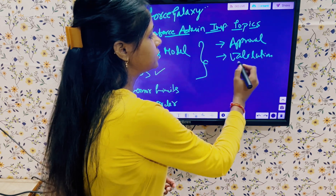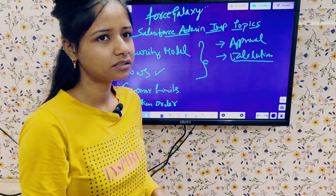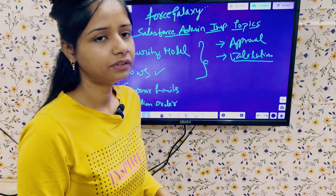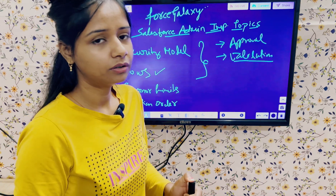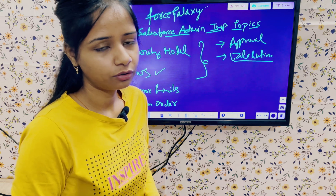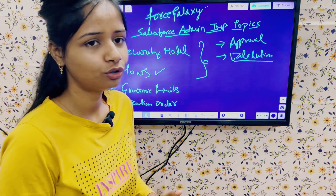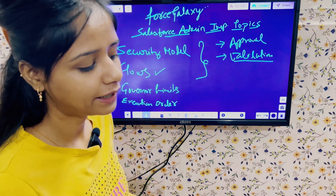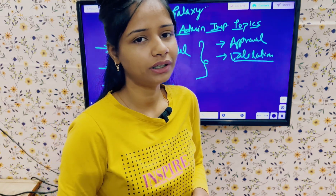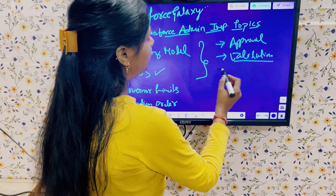For validation rules: what is the use of validation rules, when we can use them, what functions we have in validation rules, and what are the limits. Validation rules cannot always be used — there are some limits. For example, we can use validation rules only on update and insert operations. If the scenario involves deleting a record, validation rules will not work in those cases.